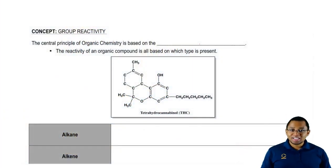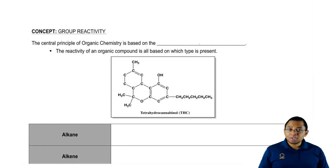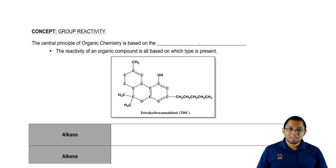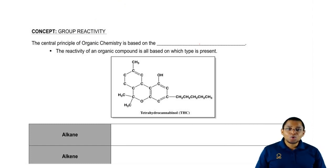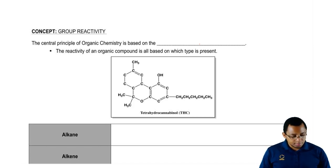I know you guys just started Chemistry 1 and you're learning all these new concepts, new ideas, and new calculation styles. But for some reason, your book wants to talk a little bit about organic chemistry. For those of you crazy enough to attempt organic chemistry in a couple of semesters, just realize for now the central principle of organic chemistry is all based on what we call the functional group.